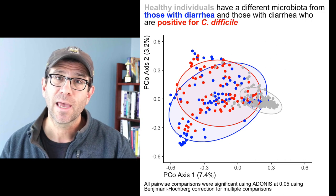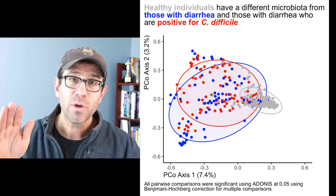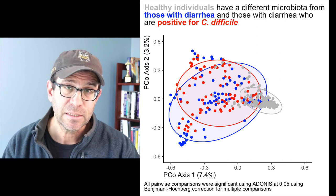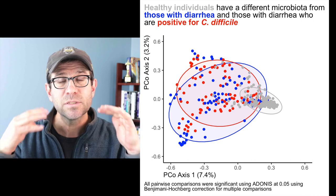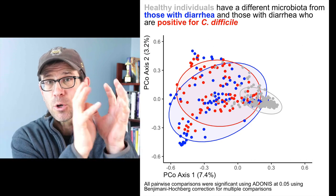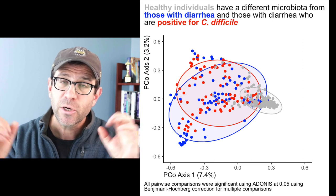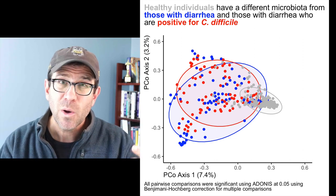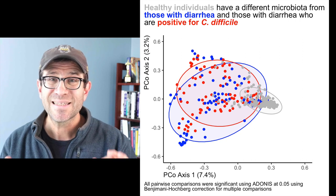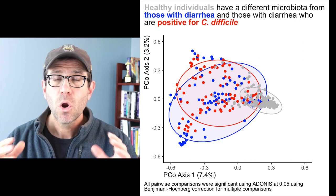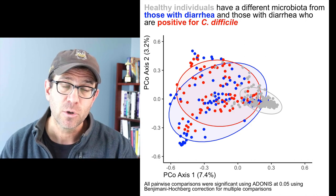We've also used a secondary pre-attentive attribute, which is color and grouping. The coloring of the point represents the treatment group or diagnosis group — in our case, healthy people without diarrhea, people with diarrhea, and people with diarrhea and a C. difficile infection. Color also allows us to group the data, because if I see a cluster of red points or blue points, my eye integrates and pulls those together. We've also helped this by putting ellipses around the three different groups.